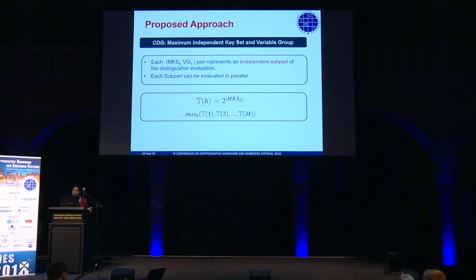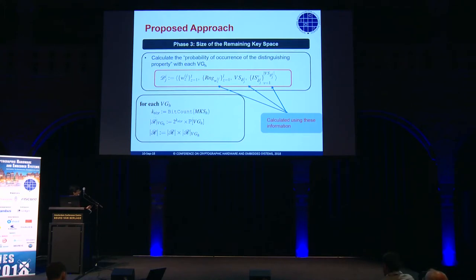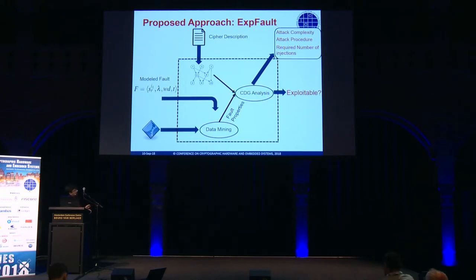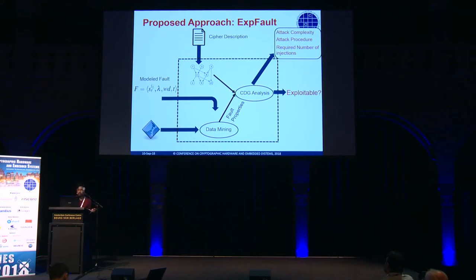Once you have the divide-and-conquer policy, you can quite easily figure out what the evaluation complexity of the distinguisher is going to be. Once you have the distinguisher and the independent pairs, you can individually figure out the remaining key complexity for each pair and combine them, giving you the filtering capability of the whole distinguisher. That completes ExpFault: you can compute the attack complexity in the form of remaining key complexity and evaluation complexity, the attack procedure is given, the required number of fault injections is returned, and ultimately it says whether your fault is exploitable or not.